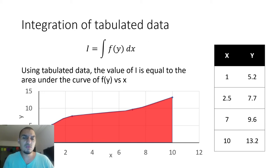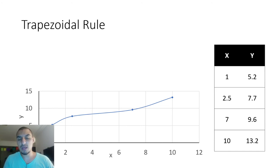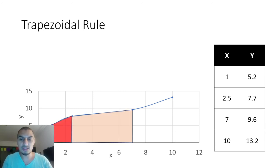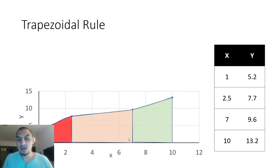One of the simplest and most widely used methods is what we call the trapezoidal rule — the trapezium area calculation. We split the big area into trapezoids. We assume this section is a trapezoid, this one is a trapezoid, and this one is a trapezoid. The total area is the sum of the areas of each of these trapezoids.